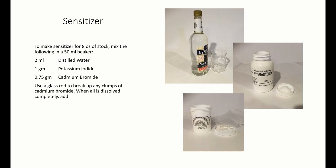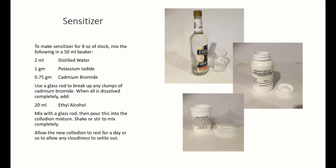Use a glass rod to break up any clumps of cadmium bromide. When all is completely dissolved, add 20 milliliters of ethyl alcohol, 180 proof. Mix with a glass rod, then pour this into your collodion mixture. Shake or stir to mix completely. Allow the collodion to rest for a few days to allow any cloudiness to settle out.